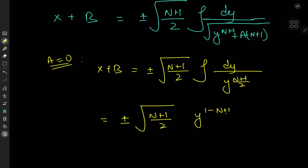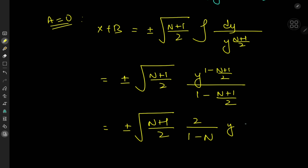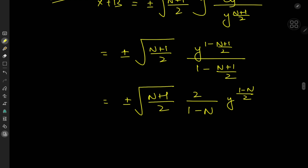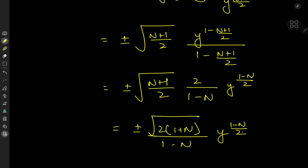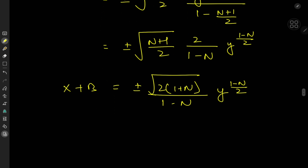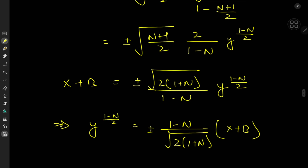Evaluating the integral, we get plus or minus root of n plus 1 over 2 times y to the power 1 minus n plus 1 over 2, divided by 1 minus n plus 1 over 2. Simplifying, this becomes plus or minus root of n plus 1 over 2 times 2 over 1 minus n times y to the 1 minus n over 2. Cancelling root 2, we arrive at plus or minus 2 times 1 plus n over 1 minus n times y to the 1 minus n over 2 equal to x plus b.